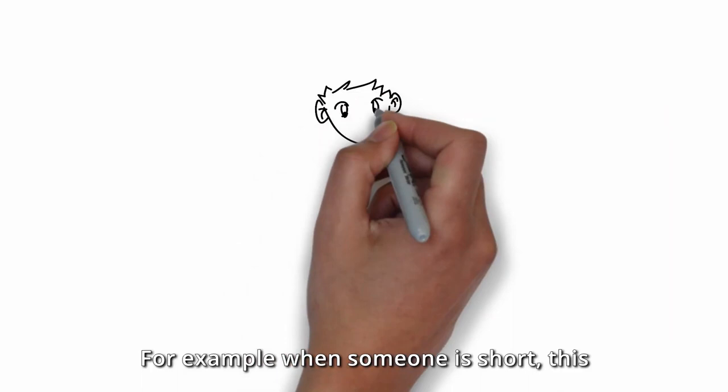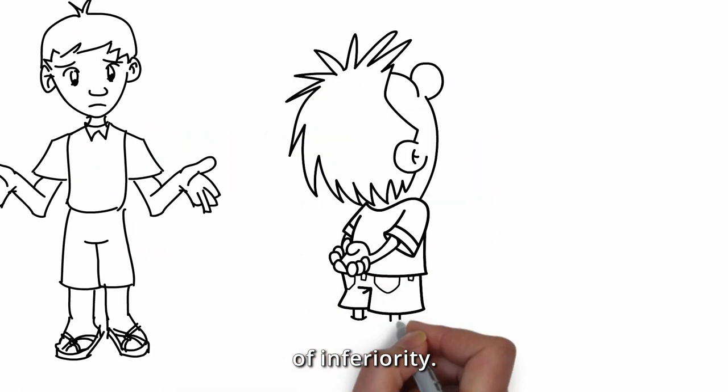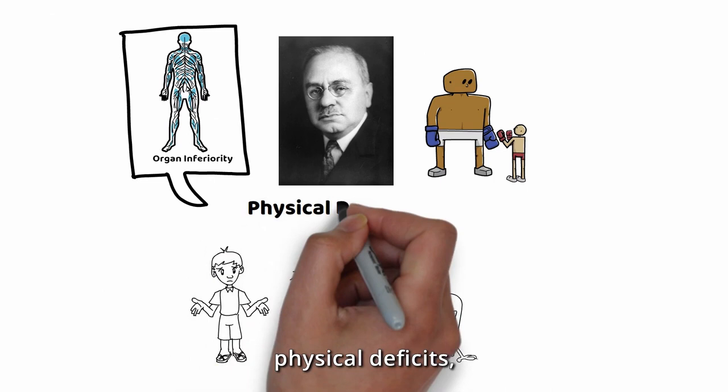For example, when someone is short, this physical limitation will lead to sense of inferiority. In other words, the psychological sense of inferiority must come from physical deficits.